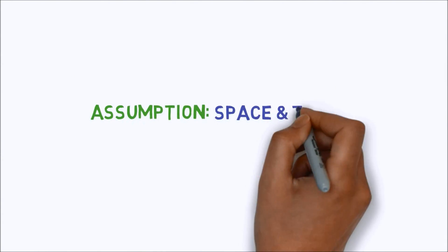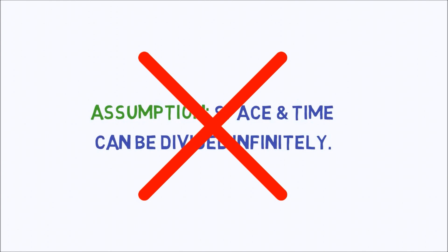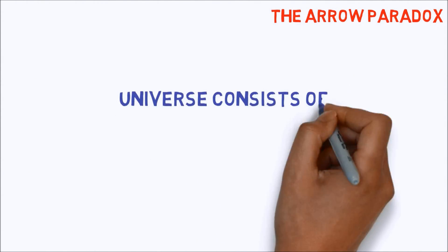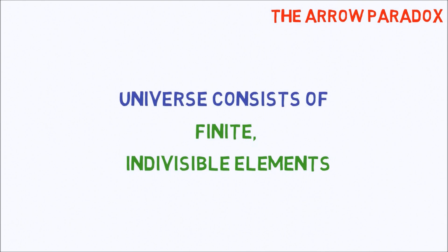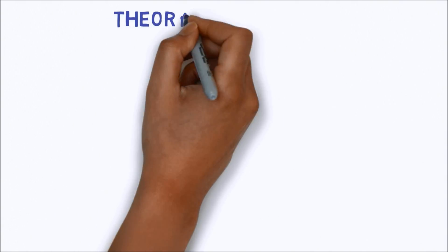Zeno's argument is based on the assumption that you can infinitely divide space and time, which is wrong. Interestingly, in another of his arguments called the arrow, Zeno also shows that the assumption that the universe consists of finite, indivisible elements is apparently incorrect. The seeming contradiction in the nature of reality is somewhat cleared by the theory of relativity.